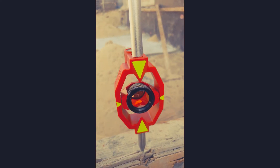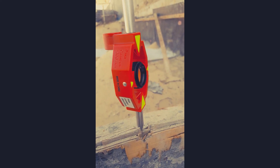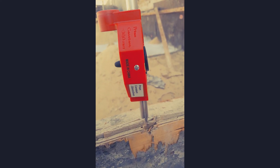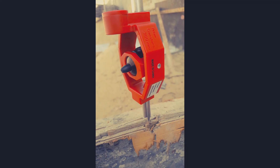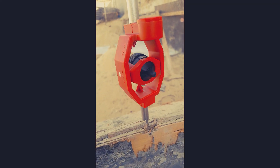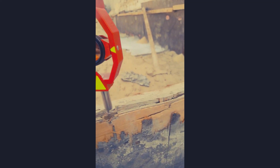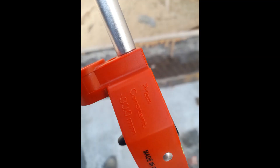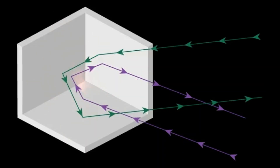Now I explain how a prism target works. In principle, the target prism is a piece of glass that bounces off the signal in the same direction it came from. The image shows how the incoming EDM signal is reflected in the same direction it came from.